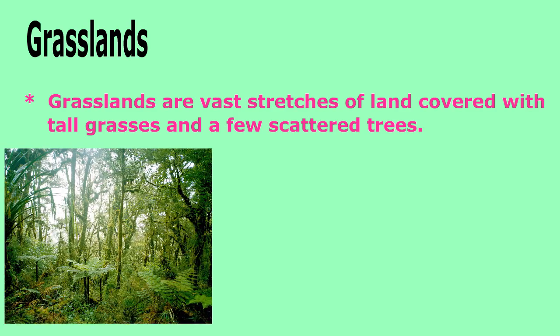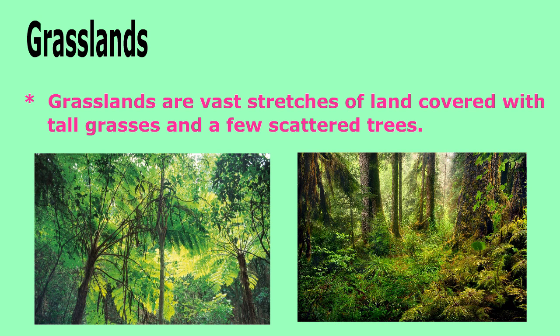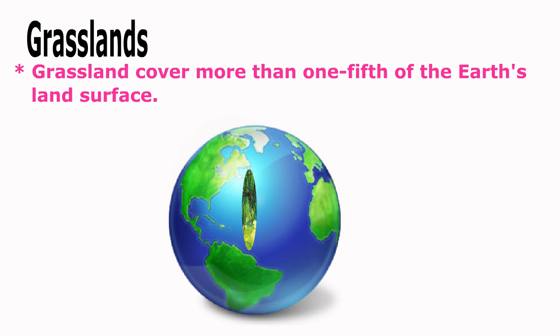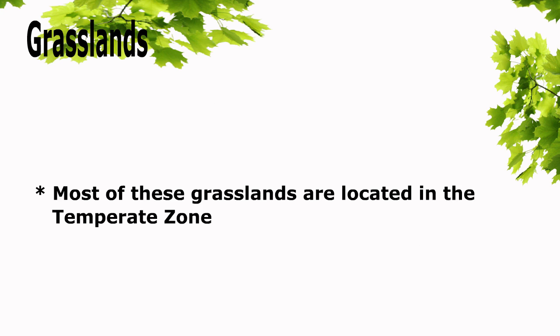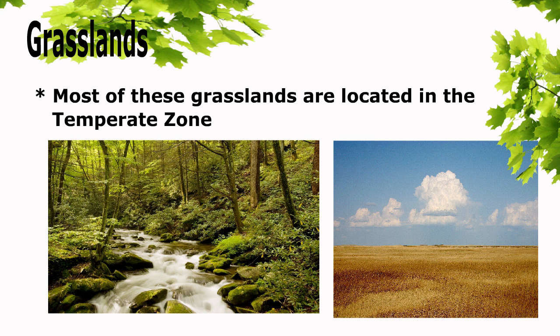Grasslands of the temperate zone. Grasslands are vast stretches of land covered with tall grasses and a few scattered trees. Grasslands cover more than one-fifth of the earth's land surface, and most of these grasslands are located in the temperate zone.